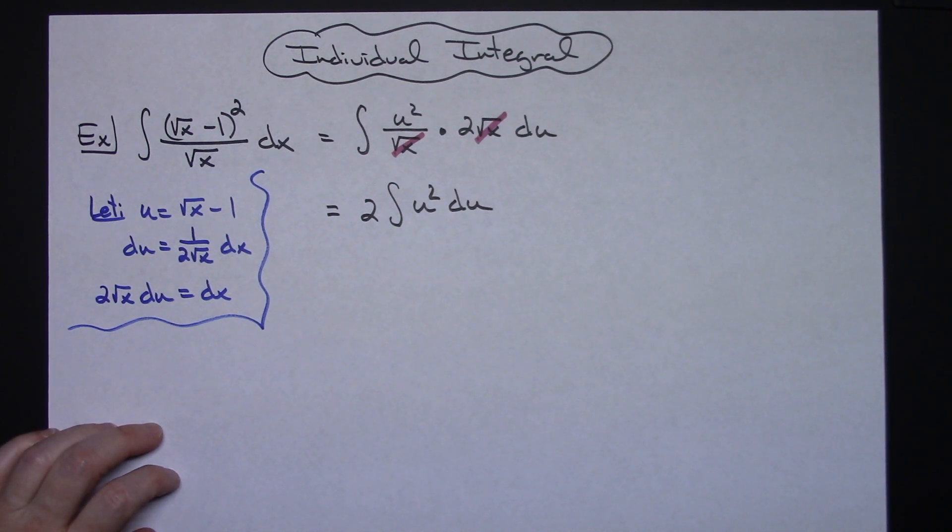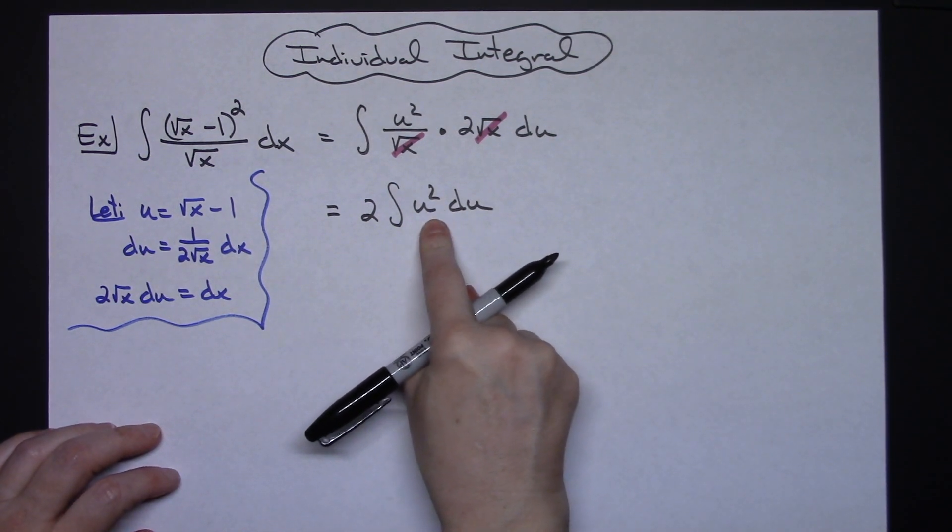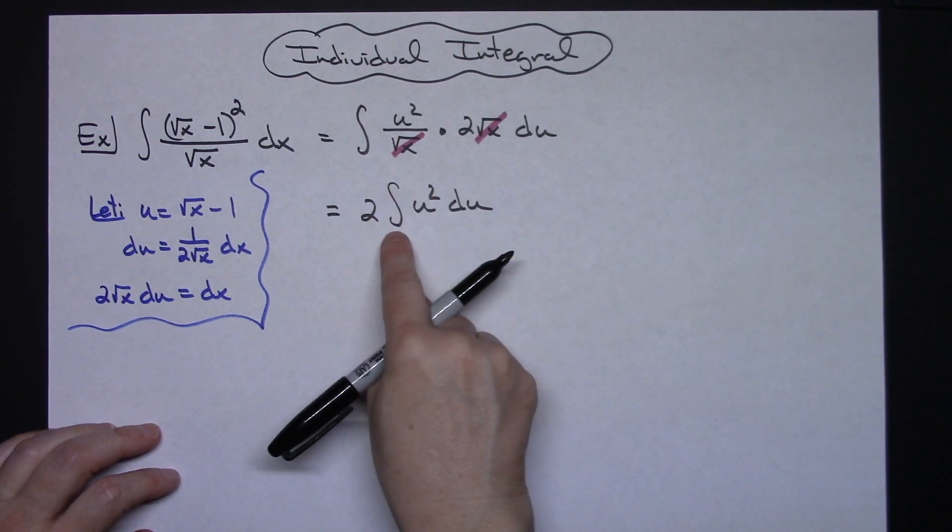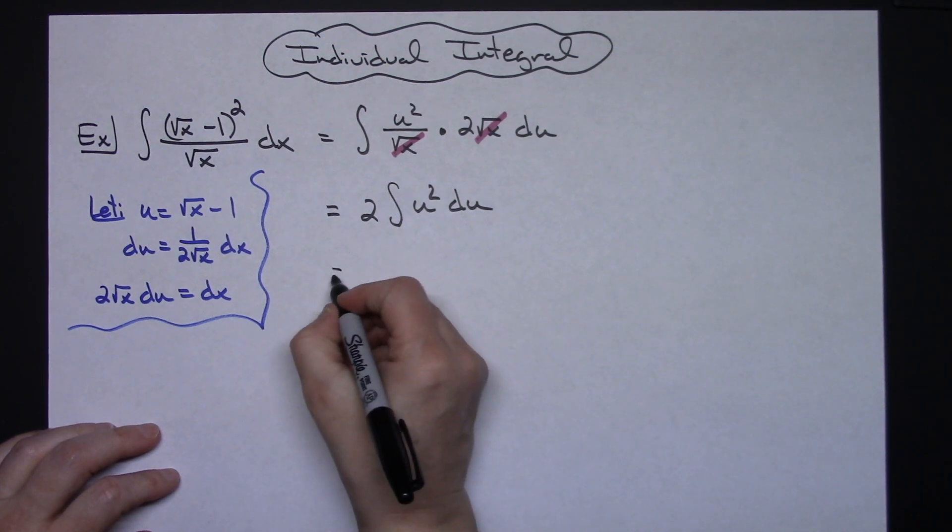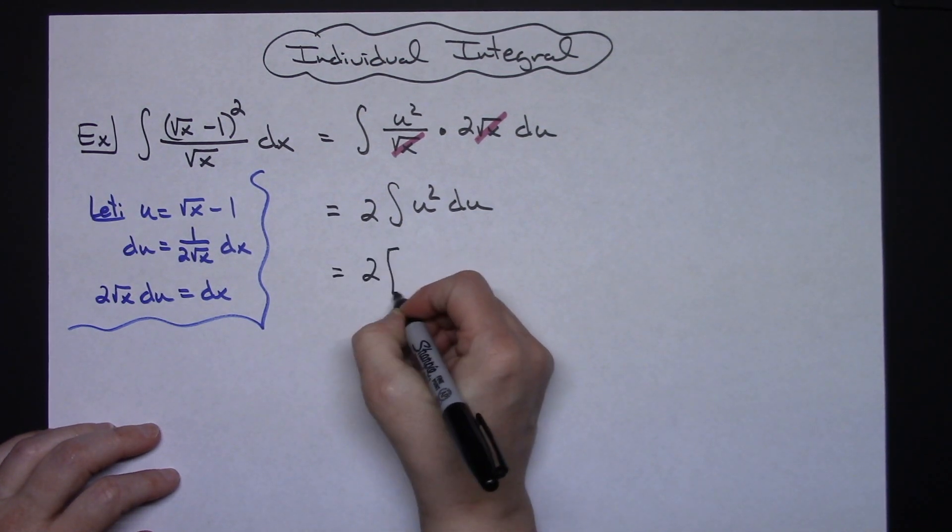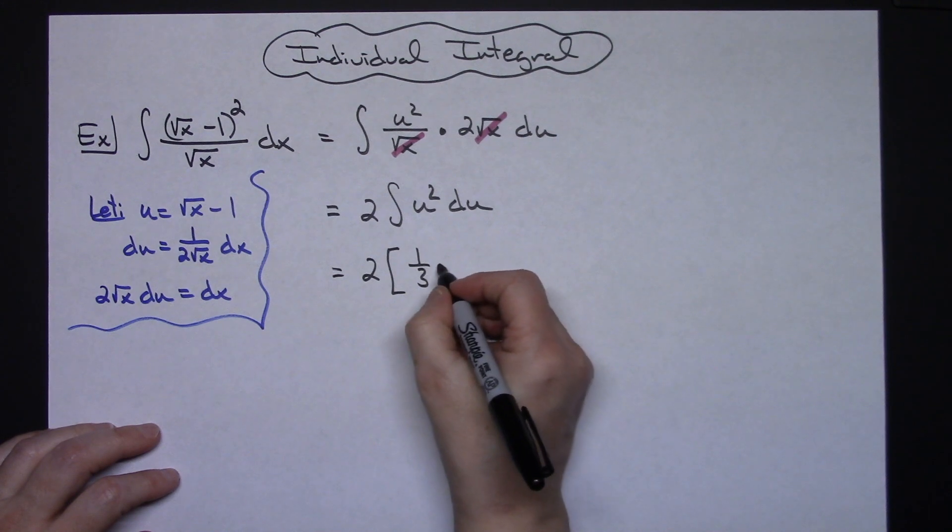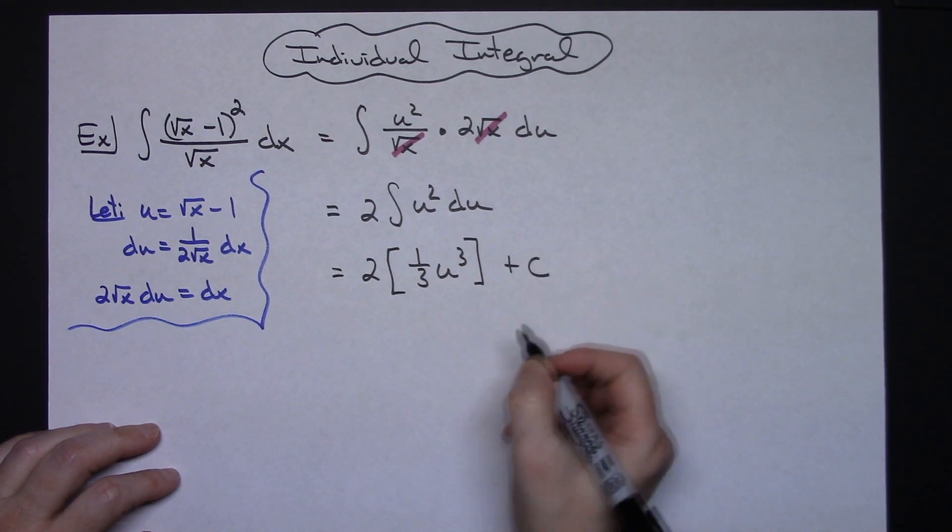At this point it's definitely just a straight integration. I'm going to go ahead and add 1 to both sides and have that 1 3rd in front. So then I'll have 2 times a 1 3rd u raised to the 3rd plus c.